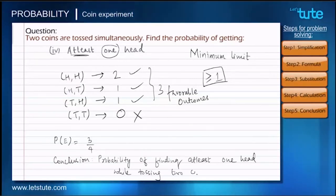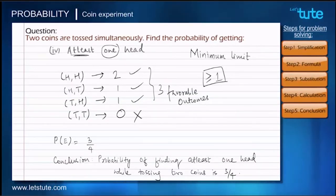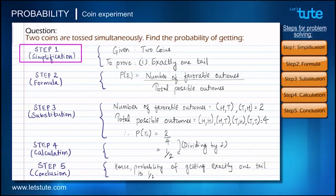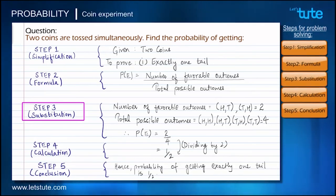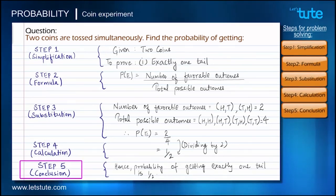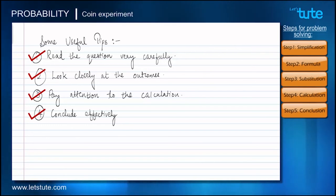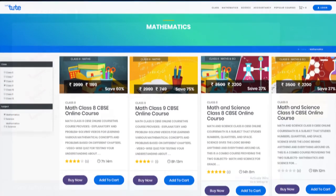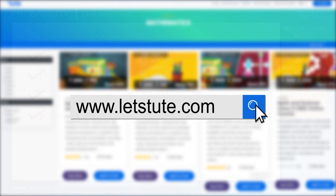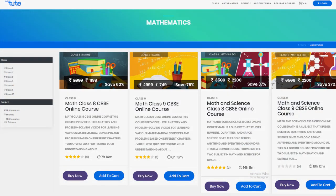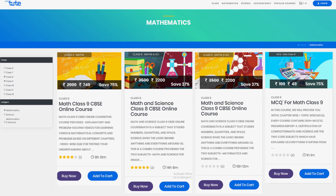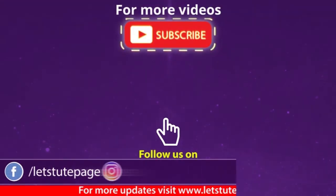We conclude: the probability of getting at least one head while tossing two coins is 3 upon 4. All four sub-questions have now been solved. Let's go back and review all the steps. That's it for today — hope you liked this session. Check out our courses at www.letstute.com. Until next time, keep watching, keep learning, and subscribe to our channel.